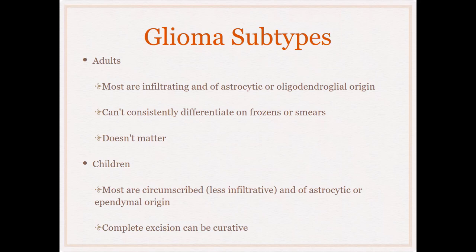In adults, the vast majority of gliomas are of the infiltrative type — they permeate the brain and are generally of astrocytic or oligodendroglial origin. A key point: you do not need to differentiate between an infiltrating astrocytoma and an oligodendroglioma intraoperatively — it's very hard to do and it doesn't matter. When looking at an adult glioma intraoperatively, you're simply establishing it as a glioma and deciding whether it's low-grade or high-grade.